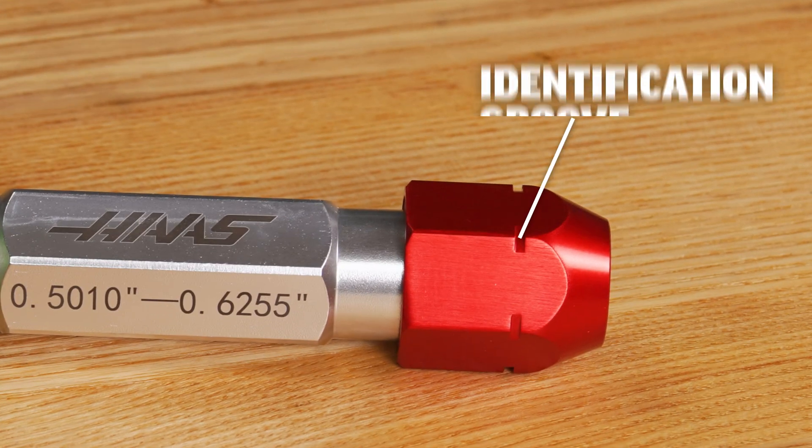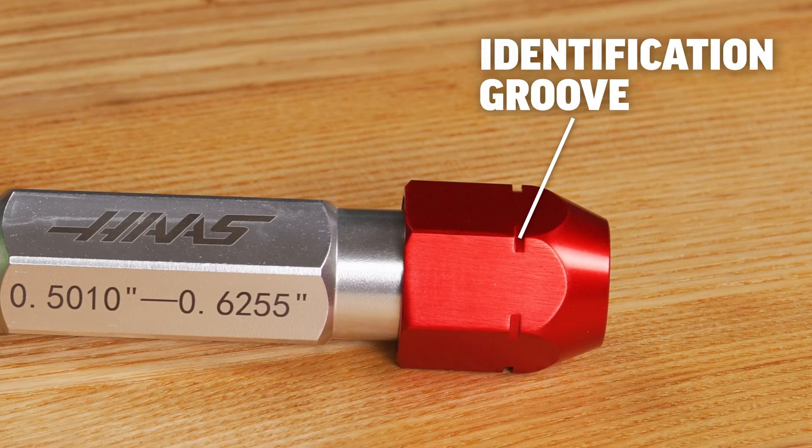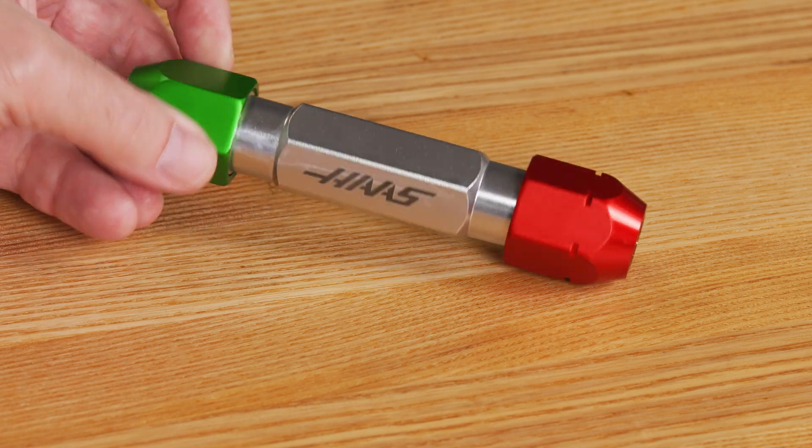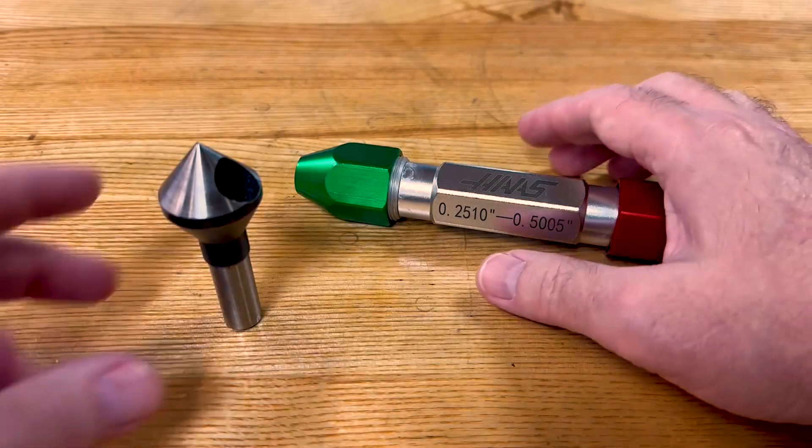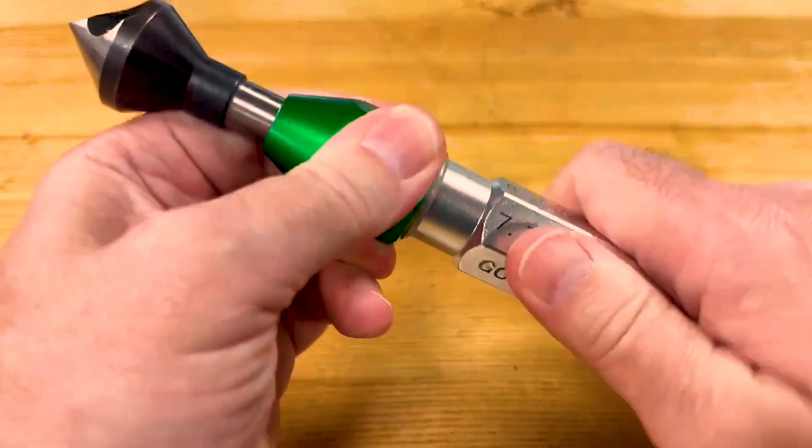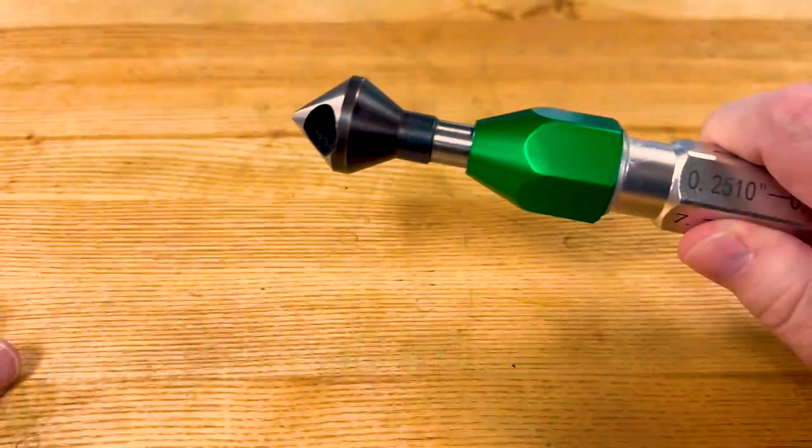Find a handle like this one that makes use of an identification groove as well as colored end caps on top of go, no go markings. This style of handle also makes a terrific pin vise for holding deburr tools and countersinks.